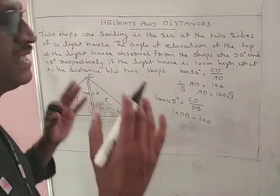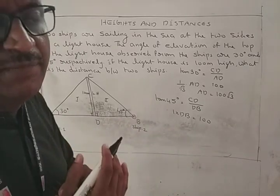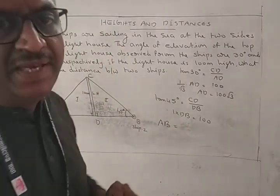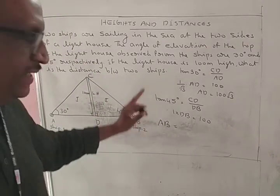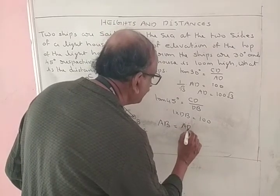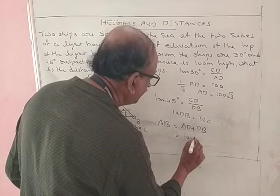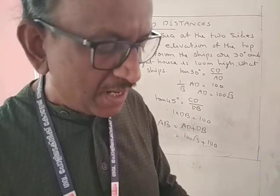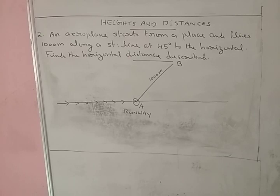We have to find the distance between the two ships. First ship is A and the second ship is B. Distance between A and B is AB. AB is equal to AD plus DB. AD is equal to 100 root 3, DB is equal to 100. Therefore AB is equal to 100 root 3 plus 100. This is the answer.